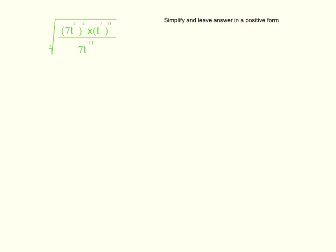Here is our first question and it asks us to simplify and leave the answer in a positive form. So what we do now is raise the powers — I would raise the power of 4 to 7 and the power of 4 to t. After you have raised all the powers, you should get this answer. You might be wondering why we got 1 for t to the power of 7 to the power of 0 — this is because anything to the power of 0 equals 1.